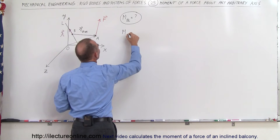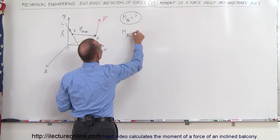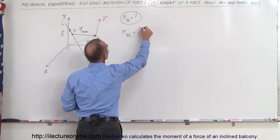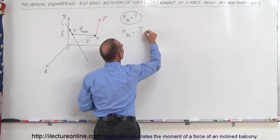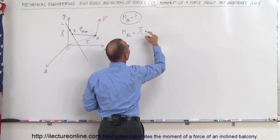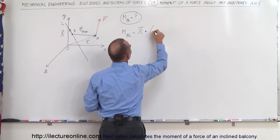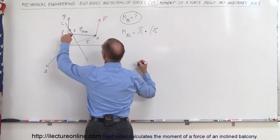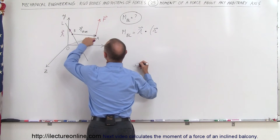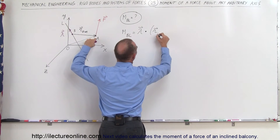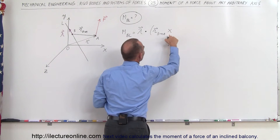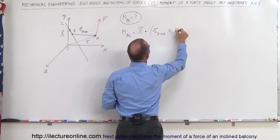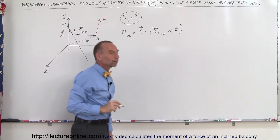The moment from B to L is therefore equal to the unit vector along that axis multiplied via a scalar (dot) product, times the position vector from that point to the point where the force is acting — R_BA — multiplied via a vector (cross) product with the force. That gives the moment.